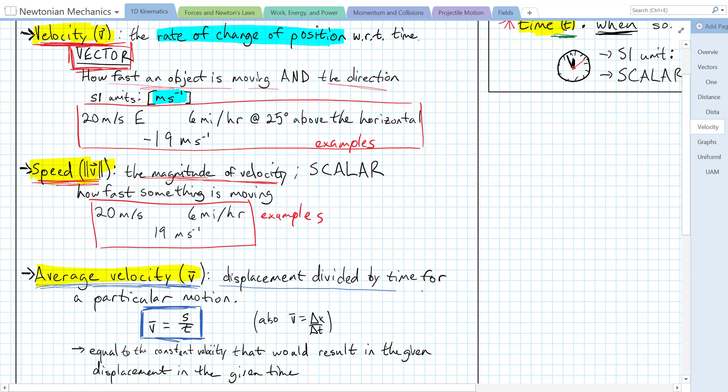Now, the average velocity tells us something for a particular motion. It's defined as displacement divided by time for a particular motion. So here's our equation right here. Velocity is displacement over time, or delta x over delta t, as we can see over here. And that's it. That's the definition. It is a vector, and it tells us what constant velocity that we would need in order to achieve the correct displacement vector in that exact amount of time.